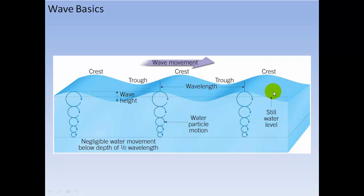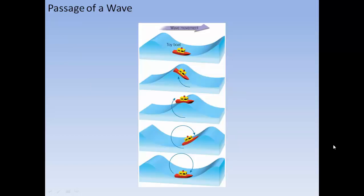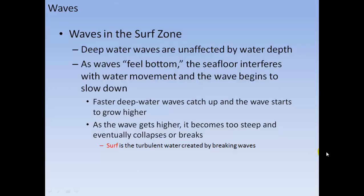As energy moves through water, particles move in a circular motion and stay in place — the wave shape is just an expression of wave energy. Below half the wavelength in depth, there is very little water movement and no real energy from that wave. Waves can travel great distances because wave energy moves forward, but not the water itself. As the wave moves through, the water passes energy along by moving in a circle — like a toy boat that is lifted up and sinks but doesn't really go anywhere as the wave passes underneath it.